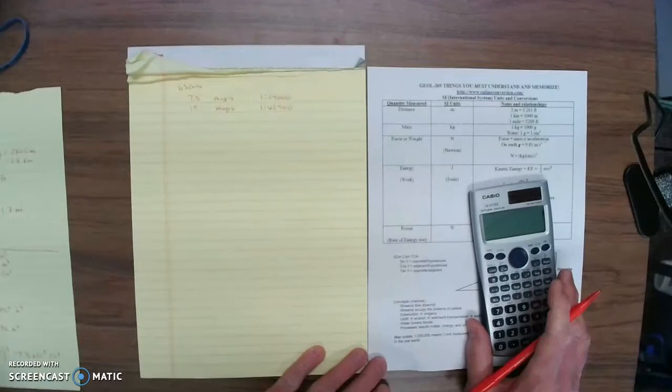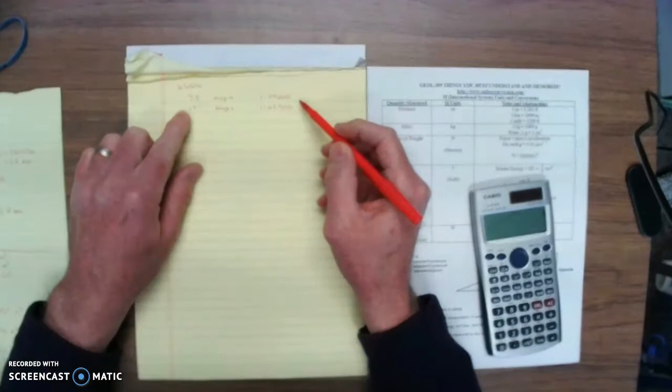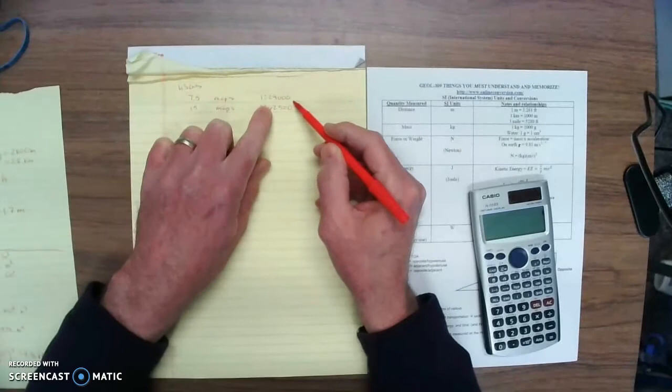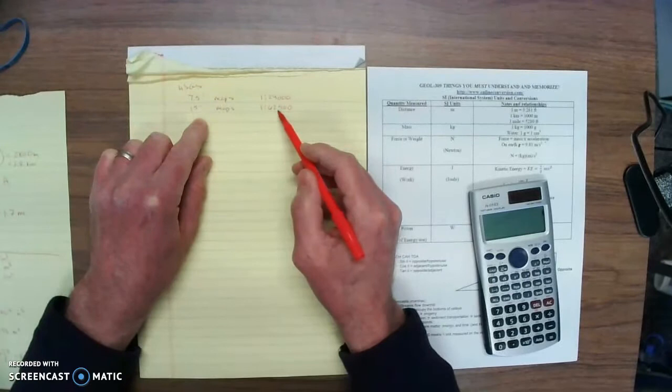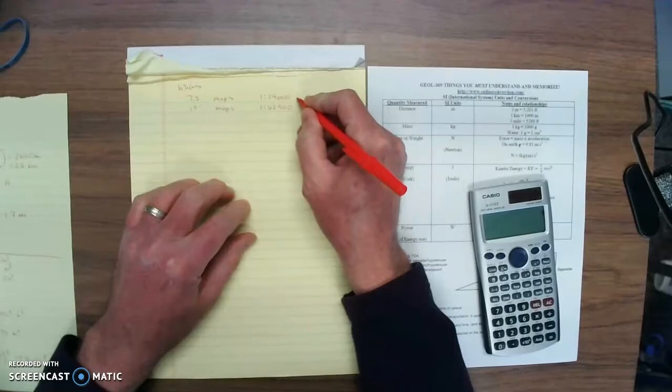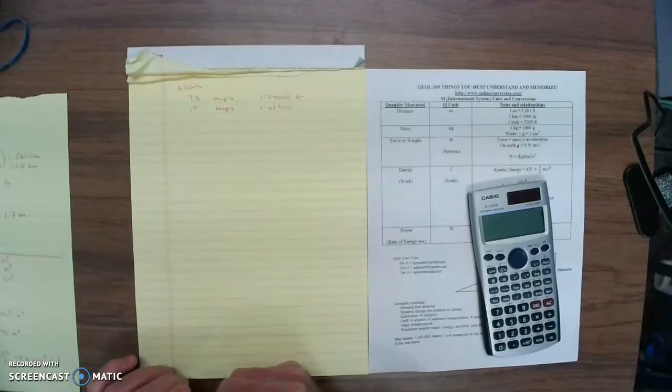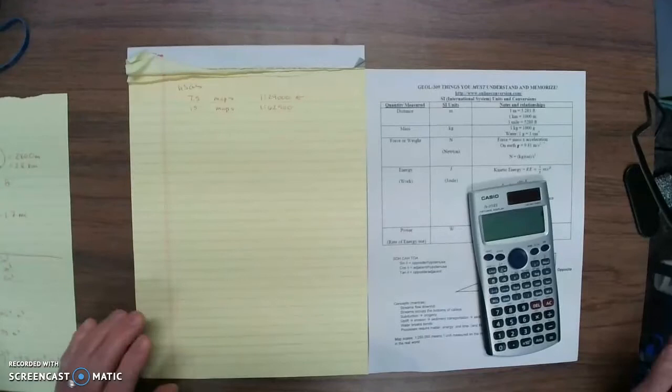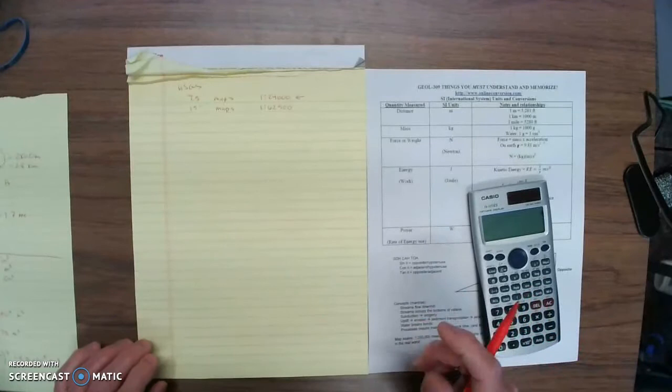So standard US Geological Survey maps, when they're printed out, have scales of 1 to 24,000. These are the 7.5 minute maps or the 15 minute maps are at a scale of 1 to 62,500. Now, what this numeric scale means, looking at the 7.5 minute maps, that means that when it's printed out on the standard size map that the USGS issues, one unit measured on the map is equivalent to 24,000 of those same units in the real world.